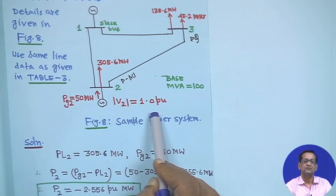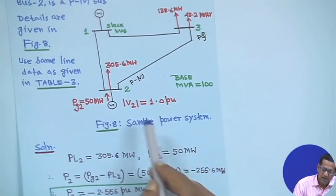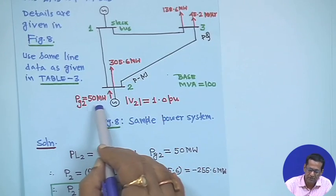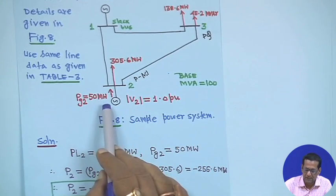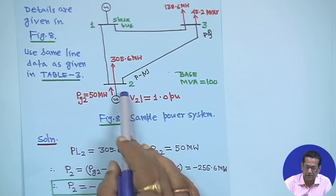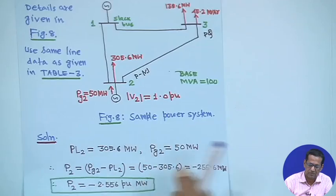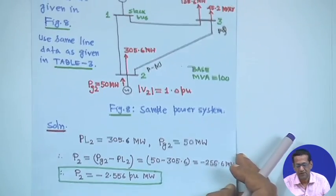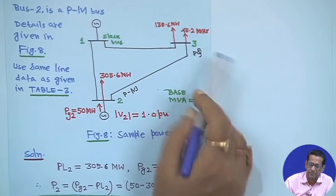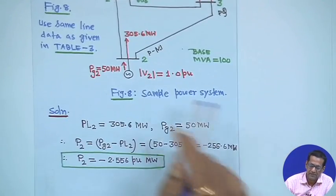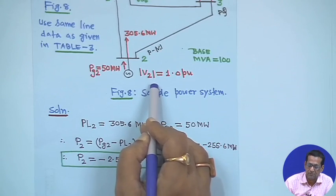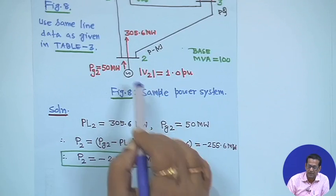The load is 305.6 megawatt and P_G2 is 50 megawatt. For a PV bus, Q is not given. That means for PQ bus, V and delta are unknown. For bus 3, V₃ and delta₃ must be found, and for this PV bus, Q and delta₂ must be obtained because voltage magnitude and real power are specified.